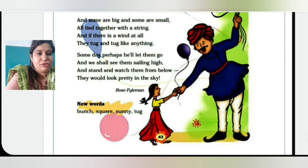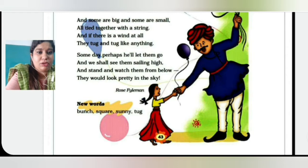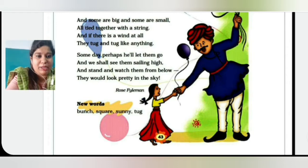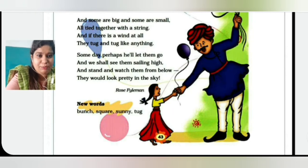This poem is written by Rose Feynman. Now we are going to see the new words, and these new words you have to write in your English notebook. First one is B-U-N-C-H, that is bunch. Then square, S-Q-U-A-R-E. S-U-N-N-Y, sunny, and T-U-G, tug.